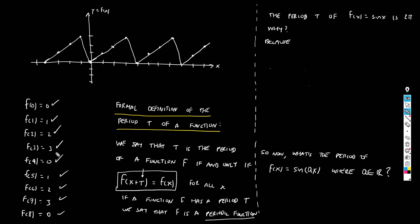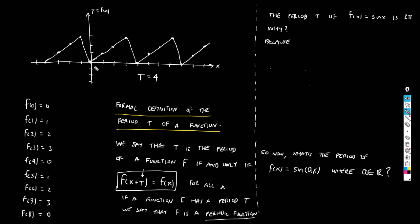What does this mean for our example? The function is being repeated over a lapse of four units — one, two, three, four, then one, two, three, four again. Every four units the function repeats. So just from looking at the graph we know the period is 4. We don't need any arithmetic; we can see it visually.